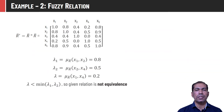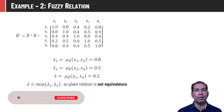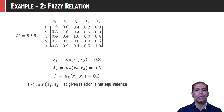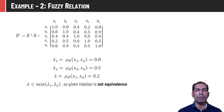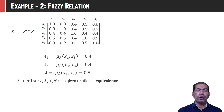We can convert this tolerance relation into an equivalence relation by taking the composition of the relation with itself: R̄' = R̄ ∘ R̄. This relation matrix represents the composition relation. Let us check whether it is an equivalence relation. It already satisfies reflexivity and symmetricity. To check transitivity: let λ₁ = membership value of (x1, x2), λ₂ = membership value of (x2, x4), and λ = membership value of (x1, x4). Here also, λ is not ≥ min(λ₁, λ₂), so this is not yet an equivalence relation and we need to find the composition again.